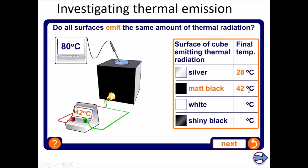What this tells you is that it's giving off a lot more heat radiation than the silver side. I won't go through these two, but silver is the worst one, matte black is the best one at giving off radiation.